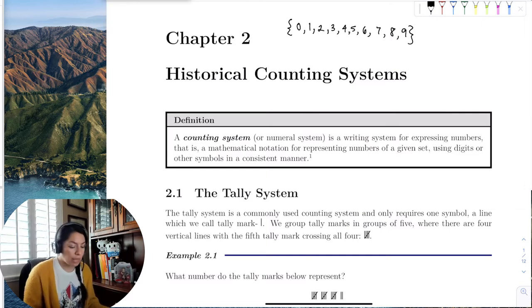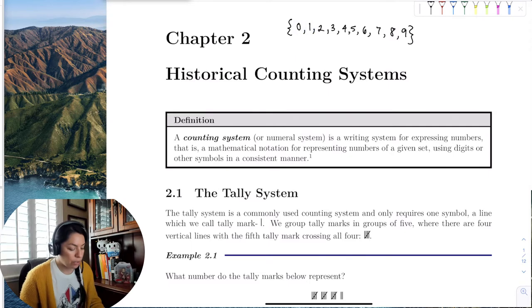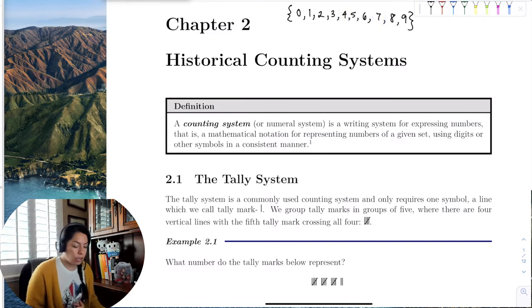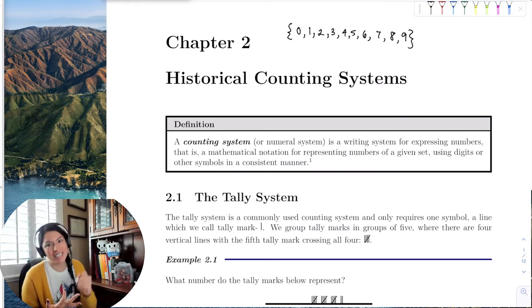And then because we have zero to nine, these digits here, we can make 10, right? We can take the one and the zero, we can make 20 with two and zero, we can make 47 by taking the digit four and seven, and creating a place value system, right? And that's why we have our place value, which is the ones, the tens, the hundreds, right?